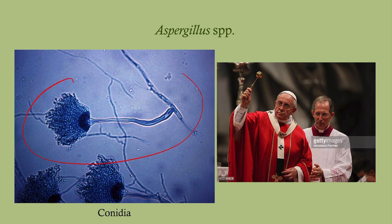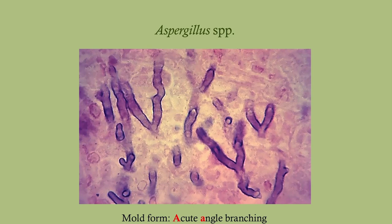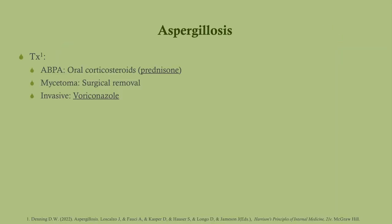Aspergillus in its conidial form is named after the aspergillum, the device priests use to disperse holy water — and it looks very similar. In mold form, you see acute angle branching; a helpful mnemonic is that aspergillus and acute angle both start with 'A.' Treatment for ABPA is prednisone. For mycetoma, it's elective surgical removal, or watchful waiting if there's no hemoptysis. For invasive aspergillosis, use voriconazole. In pregnant patients, azole antifungals are contraindicated, so use amphotericin B.